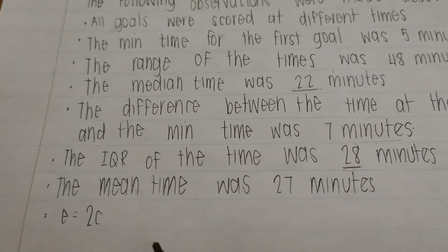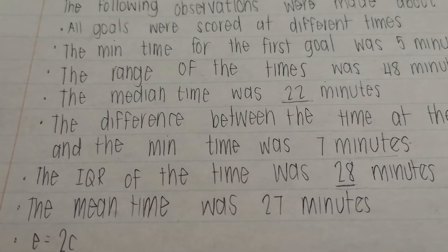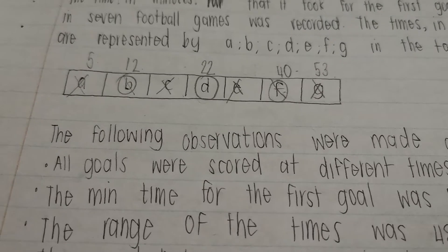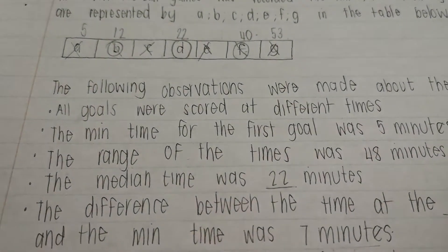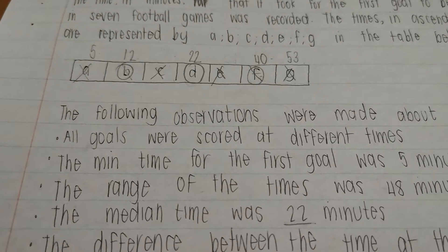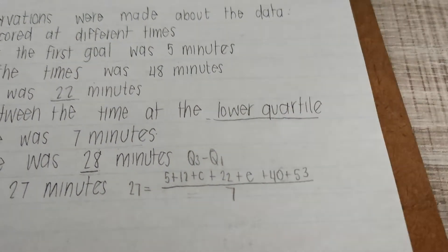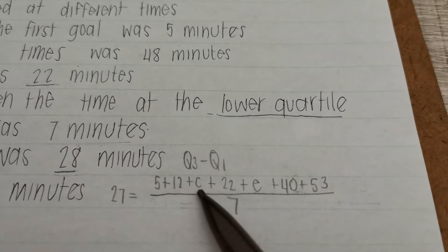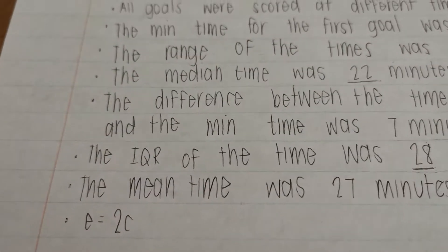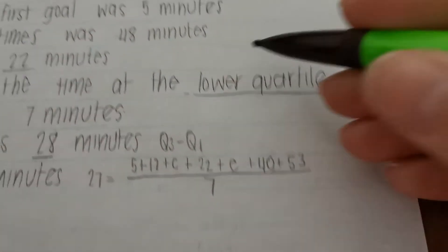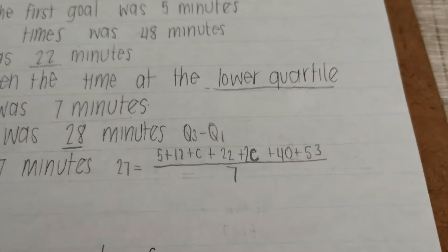And then they told us that the mean time was 27 minutes. We know that to calculate mean, you add all of the numbers and you divide by how many there are. So let's add all of the numbers. I'm going to write them down. So 27 is equal to 5 plus 12, plus C plus 22 plus E plus 40 plus 53, right? Divided by 7. Now we have a bit of a problem. I have C over here and I have E over here and it's just one equation and two unknowns. So let's see what the next bit of information says, that E is equal to 2C. So here where I see E, I'm going to replace this with 2C.